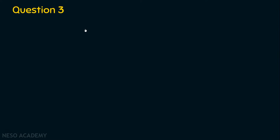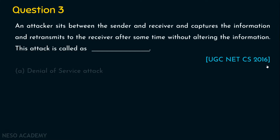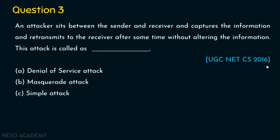Let's now move on to question number 3. The question is: an attacker sits between the sender and receiver, captures the information, and retransmits it to the receiver after some time without altering the information. This attack is called as dash. This question was asked in UGC Net Computer Science in 2016. The options are: Option A, denial of service attack. Option B, masquerading attack. Option C, simple attack. Option D, complex attack.